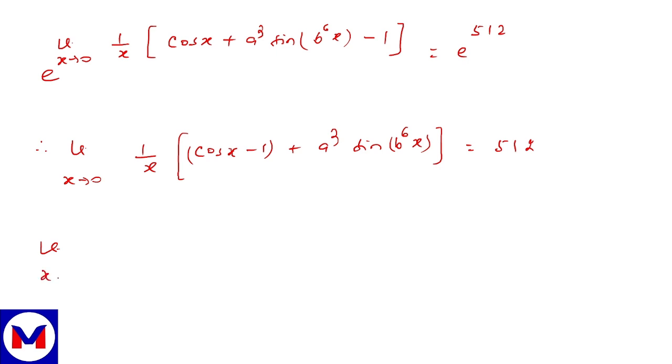To solve the limit, this becomes cos x minus 1 by x, plus a cube, x tend to 0. Since sine x by x is correct and x is below, but we have b to the power 6, so multiply by b to the power 6, equals 512.